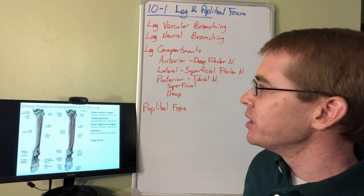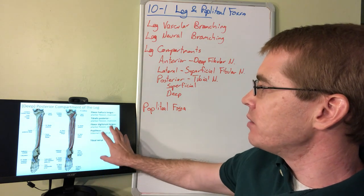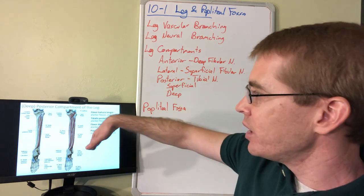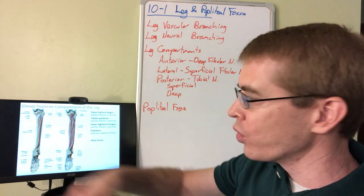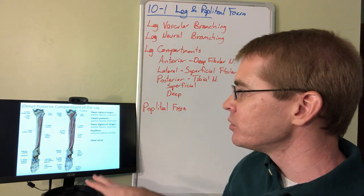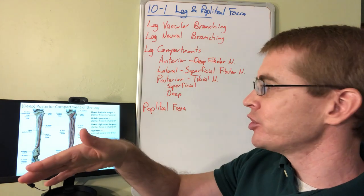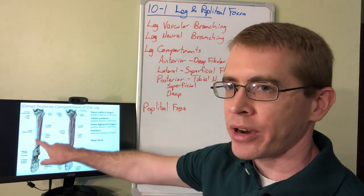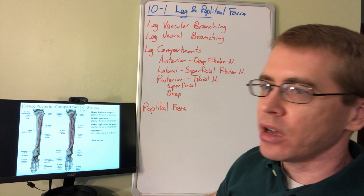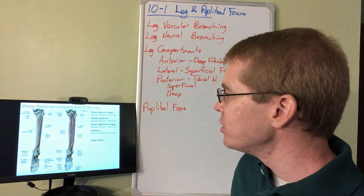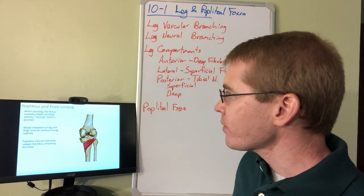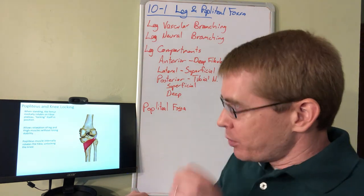In the deep posterior compartment, we see more plantar flexors as well as muscles that cause inversion of the foot — rotation toward the midline. These are again innervated by the tibial nerve. They cause inversion because their tendons travel behind the medial malleolus to attach to the medial portion of the foot, facilitating both plantar flexion and inversion.